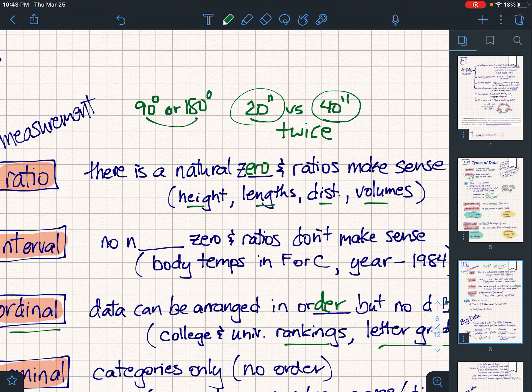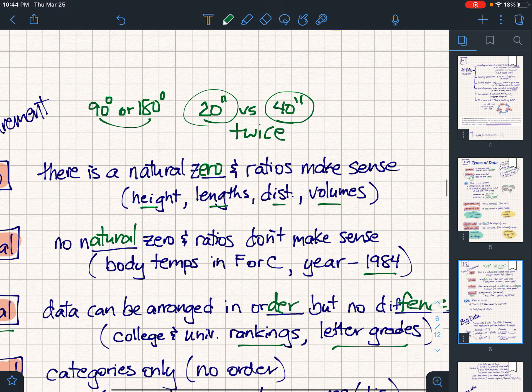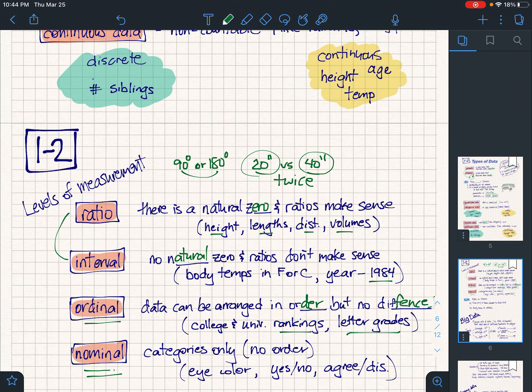It's only 90 degrees more. So there is no natural zero. Even for the years, 1984 is pegged to year zero, which some people call the common era, other people say that's the year of Christ's birth. So these are like arbitrary spots that we put down, and zero doesn't really have a particular meaning. Also, ratios don't make sense.